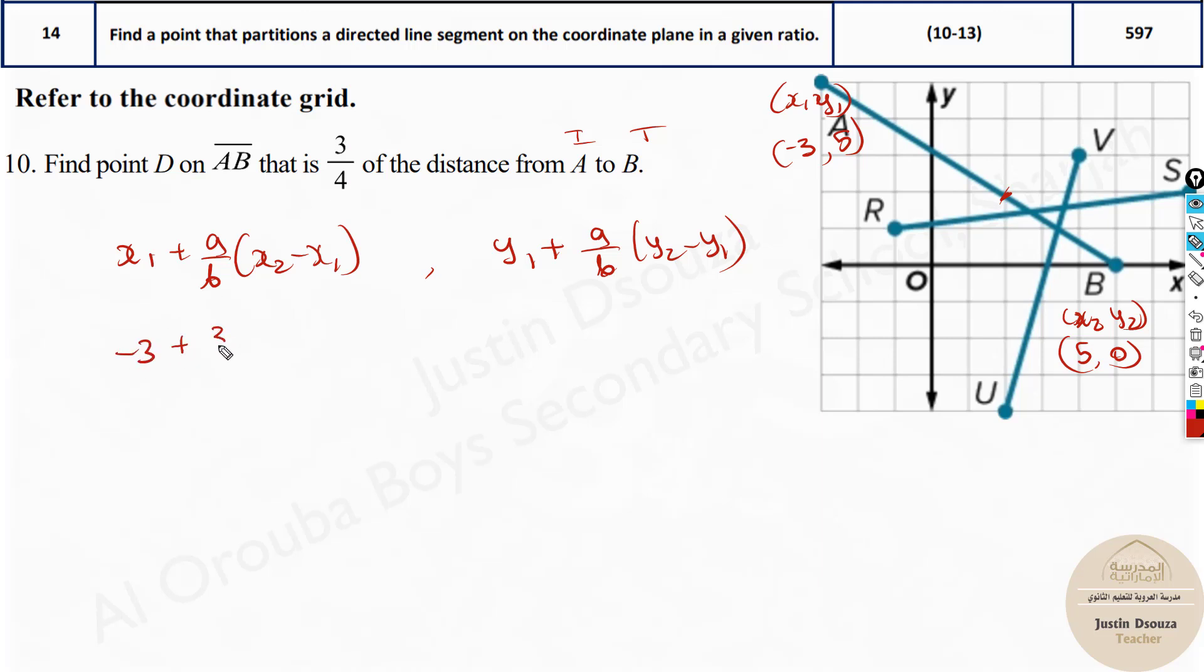It's minus 3 plus 3/4 into X2, which is 5 minus minus 3. What about this one? I'll substitute it directly. It's 5 plus 3/4, that is the fractional distance, and here Y2 is 0 minus 5.